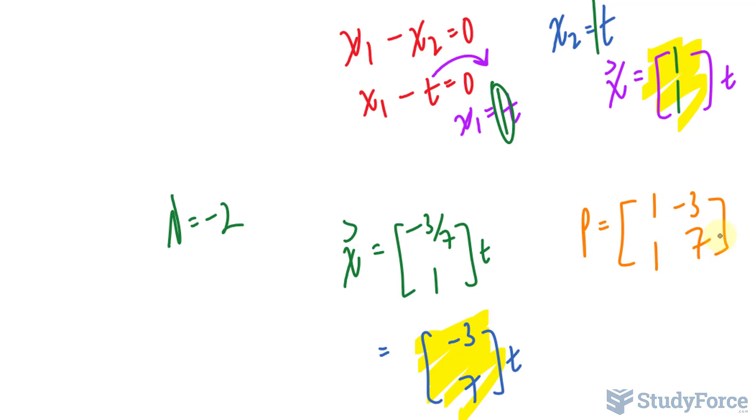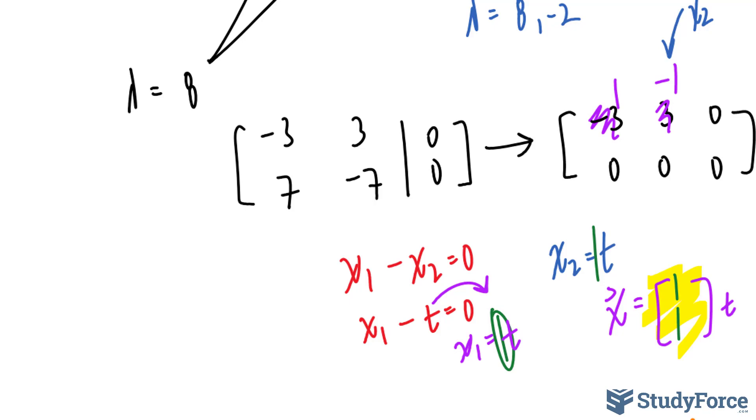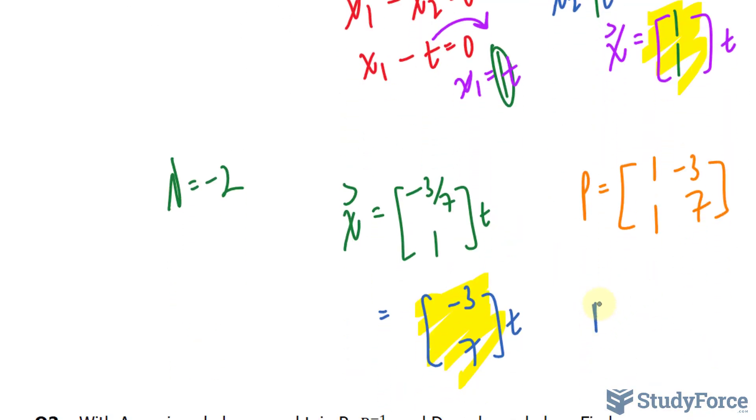The next step in this process is to find D, and using the formula that I showed you at the beginning, the inverse of P. D is dependent on the order in which you place this in. So you know how we put 1 and 1 in the first column, and negative 3 and 7 in the second column? Well, that means that 8 needs to be the first element in the diagonal matrix. And negative 2, the second element. So we found our P, we found our D, we need to find the inverse of P.